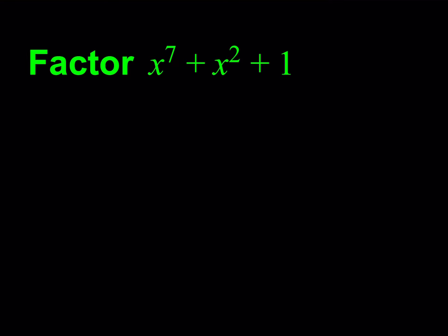So what are we supposed to do here? We're supposed to factor this. When you look at an expression like x to the 7th plus x squared plus 1, there's no common factor, there's no difference of two squares, there's no cubes, so on and so forth. It's a completely different idea.